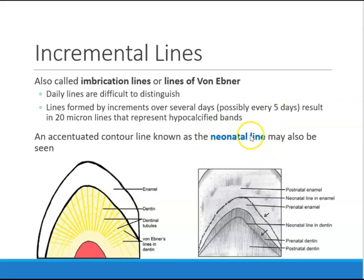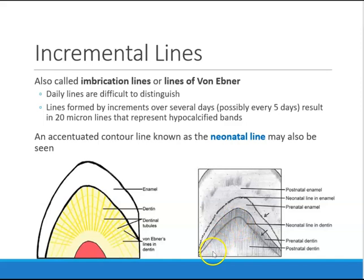There is also a neonatal line in dentin, similar to enamel. There's prenatal dentin — formed while the baby is in the womb — and postnatal dentin, formed after the baby is born. A neonatal line marks the difference between them. When the baby comes out into a new environment with new nutrients, the dentin looks slightly different, creating that neonatal line.